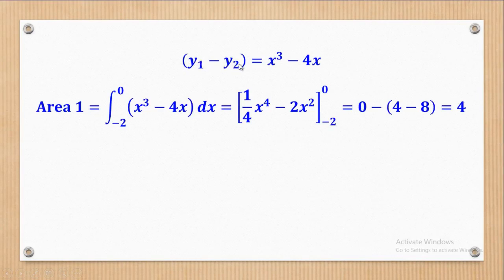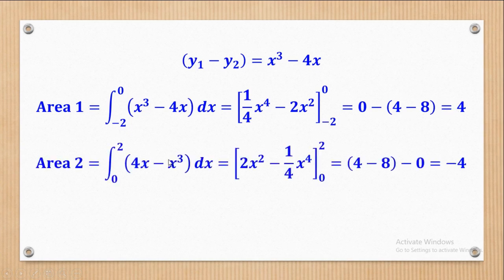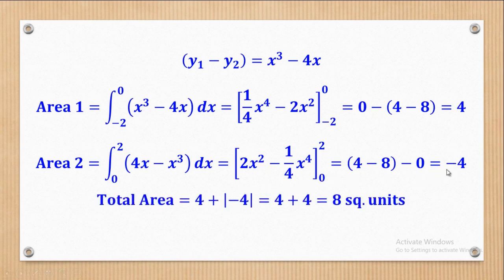y1 minus y2 gives the integrand. For Area 1, integrating from negative 2 to 0 and substituting the limits gives area 1 equal to 4. For Area 2, integrating the same function from 0 to 2 gives negative 4. Since we are interested in magnitude, we take |negative 4| equal to 4, so the total area is 4 plus 4 equal to 8 square units.